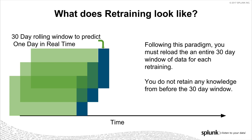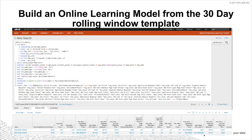You're not retaining any knowledge from before that 30-day window — it's gone. Monday 30 days ago, let's say it was a Friday. When you go on to Tuesday, you've lost that old Friday, the oldest day, and it's gone forever. But there is a way to change that in the toolkit: online learning, or batch online learning in this case.